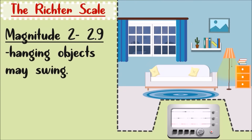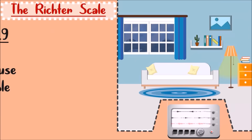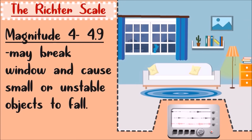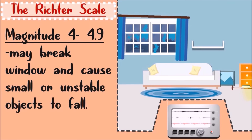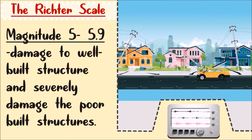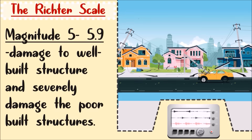If the seismograph measures 2 to 2.9 magnitude, people may feel it and they might observe hanging objects swinging. If the magnitude reaches 3 to 3.9, the ground movement is comparable to the vibration of a passing truck. For magnitude 4 to 4.9, the earthquake may break windows and cause small or unstable objects to fall. For magnitude 5 to 5.9, the earthquake may damage a well-built structure and can severely damage a poorly built structure.